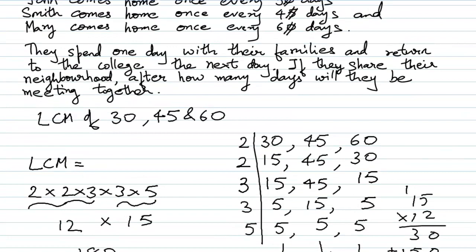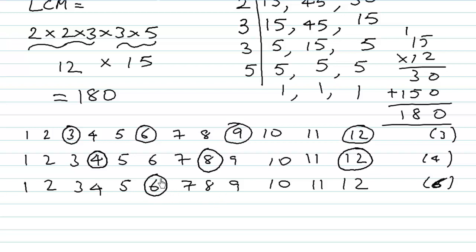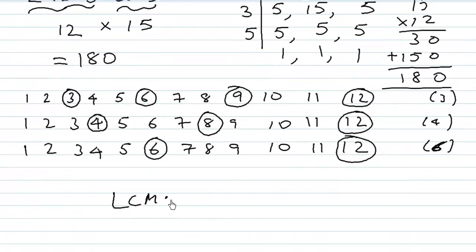Smith will be coming after 4 days, so he will be coming on day 4 — he cannot meet his friends then — then on day 8, then on day 12, so he meets his friend on day 12. Mary comes after 6 days, so she will be coming on day 6 and then directly on day 12. So she can meet both friends on day 12. And of course, the LCM of 3, 4 and 6 is 12, so they will be meeting after 12 days. That is the meaning of LCM.